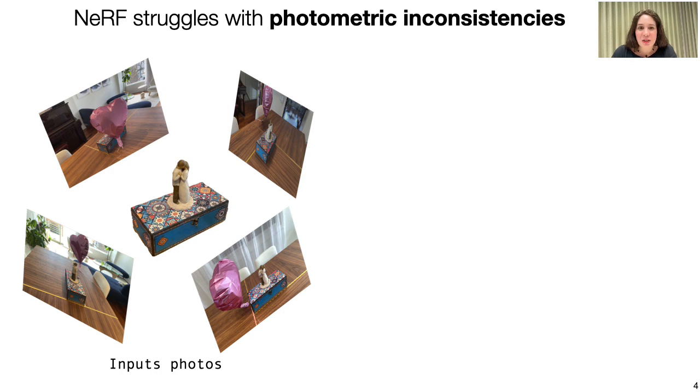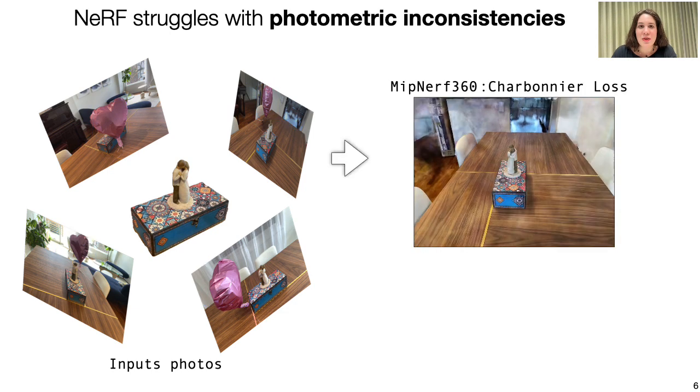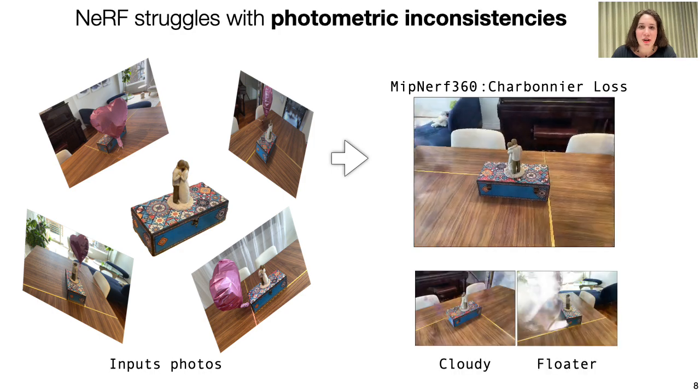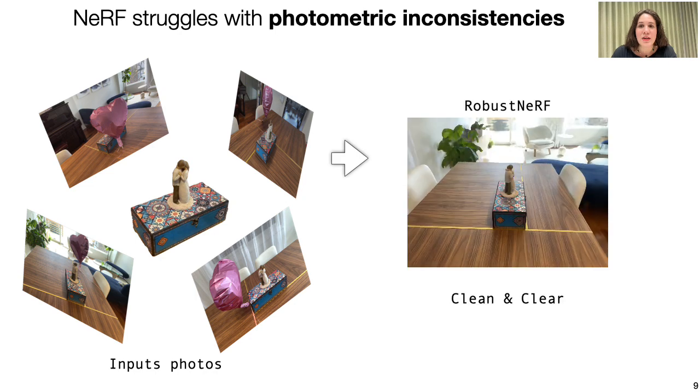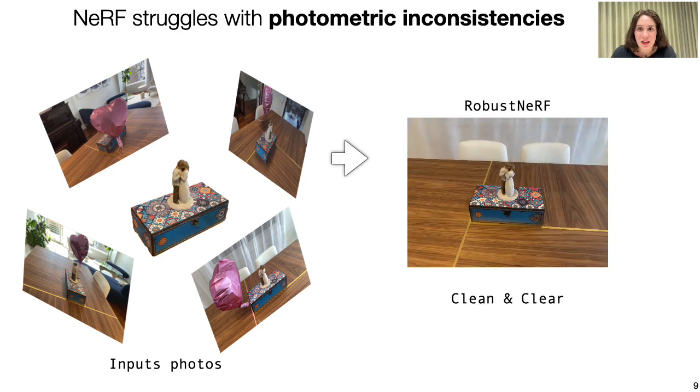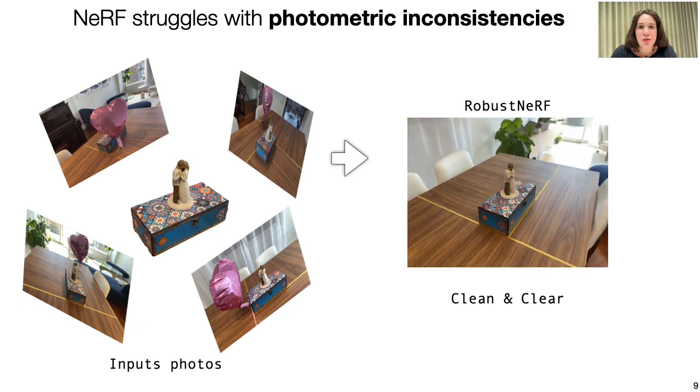Right now, if you have transient objects such as this randomly placed pink balloon, the rendering will be crowded with shadowy clouds and floater artifacts. As a solution to clean up the rendering and ignore the transient objects and distractors, we propose RobustNRF. Let me show you the two side by side.